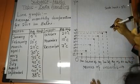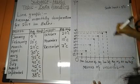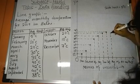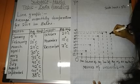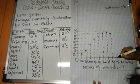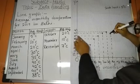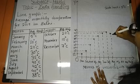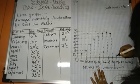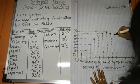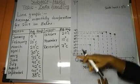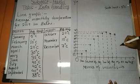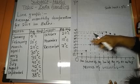Then, next one is August month, 40 degrees. Then, September month, 38 degrees. Again, it will come between 35 and 40, so just check where it will come. It will come somewhere here, 38 degrees. Then, October month, 20 degrees.